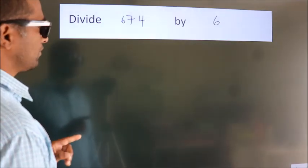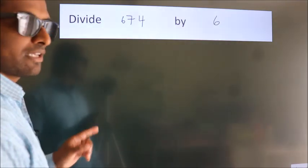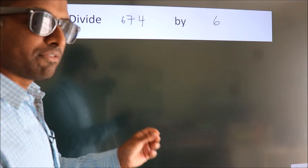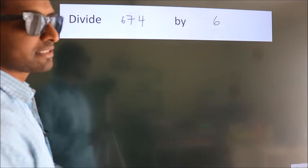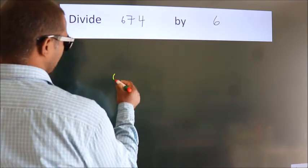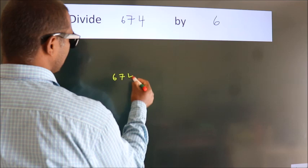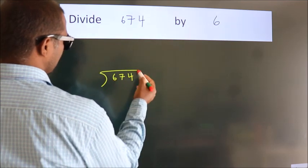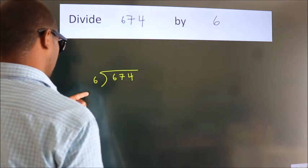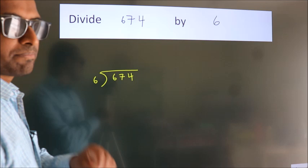Divide 674 by 6. To do this division, we should frame it in this way. 674 here, 6 here. This is your step 1.